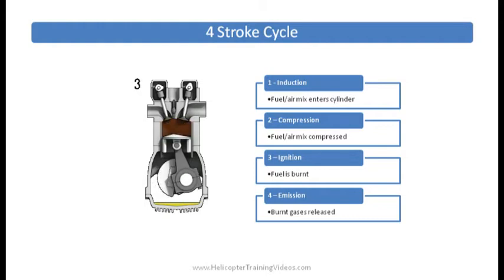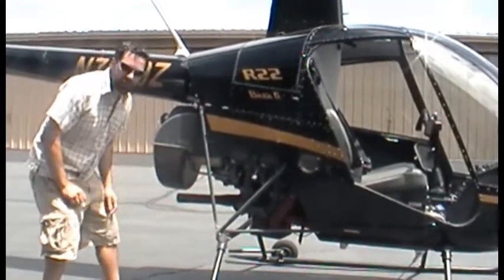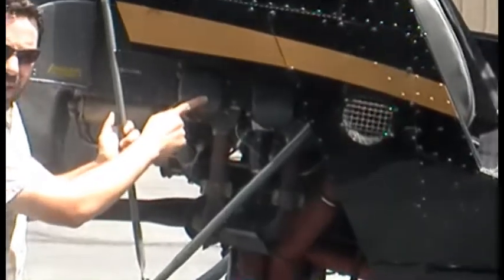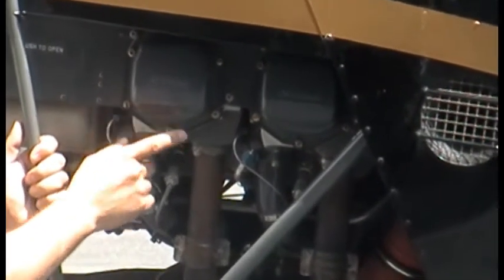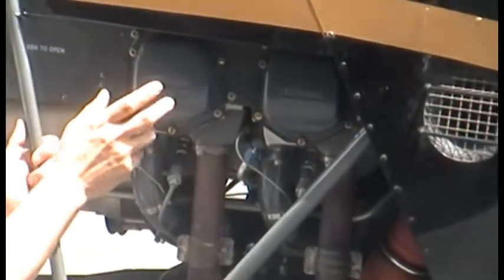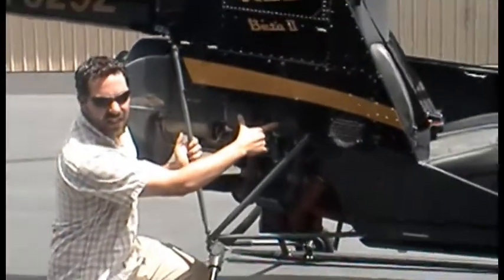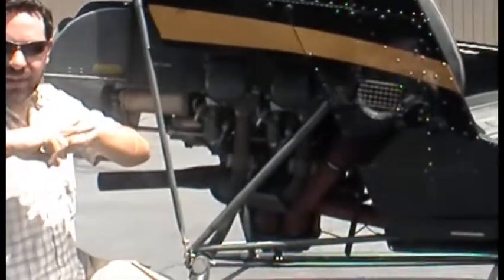Okay, so we're looking at the right side of an R22 Baby Two and we're going to talk about the engine quickly. You can see it's a Lycoming engine, it's an O320-J2A. What the O stands for is opposed because you've got two cylinders here and two cylinders on the other side and they're horizontally opposed.